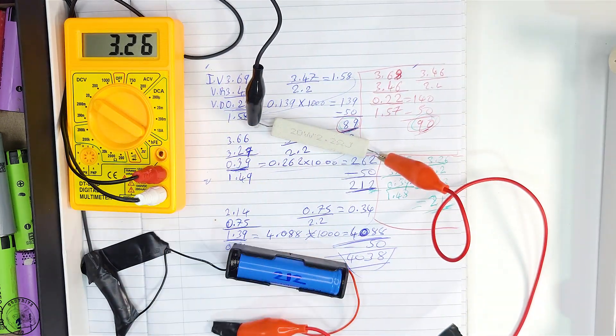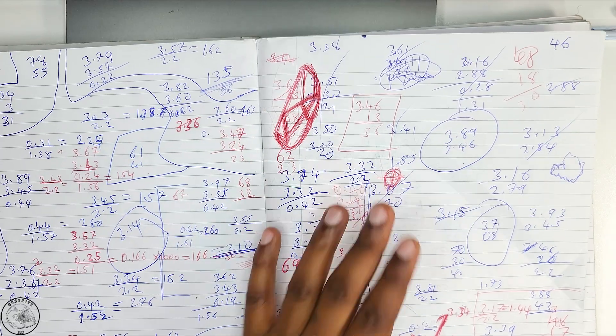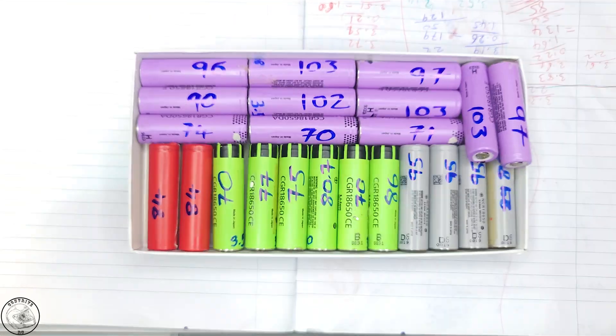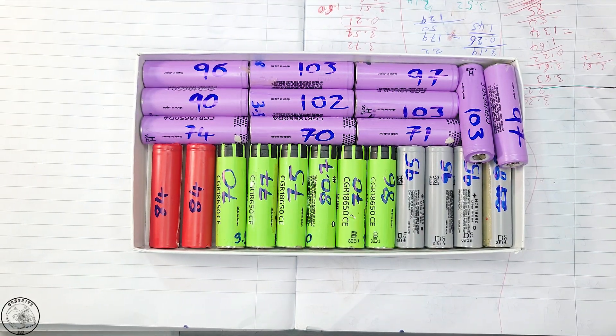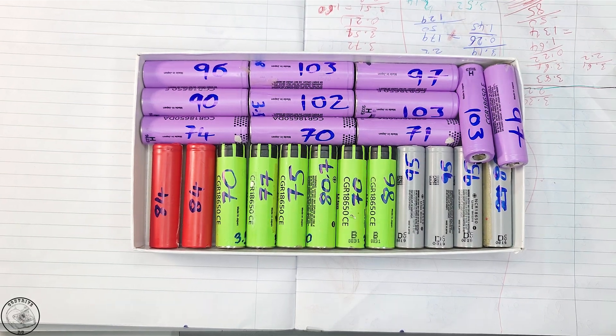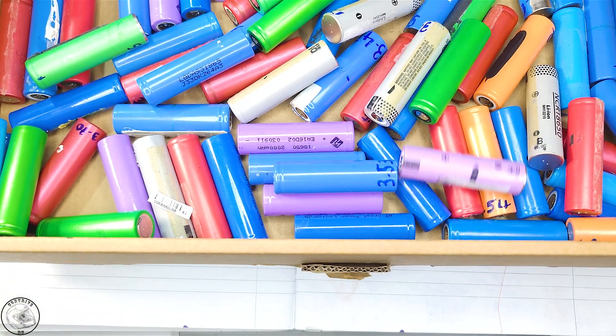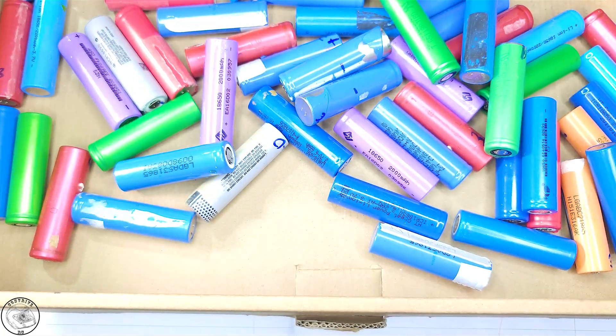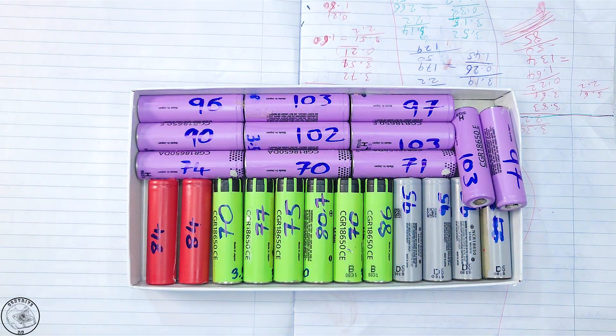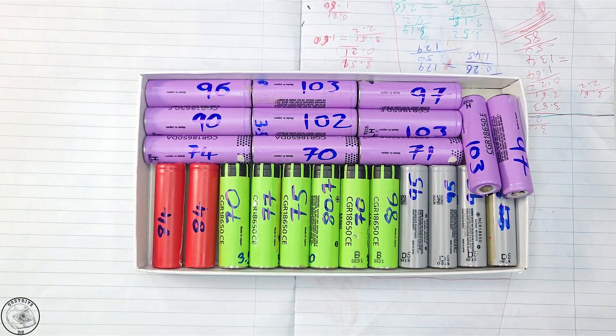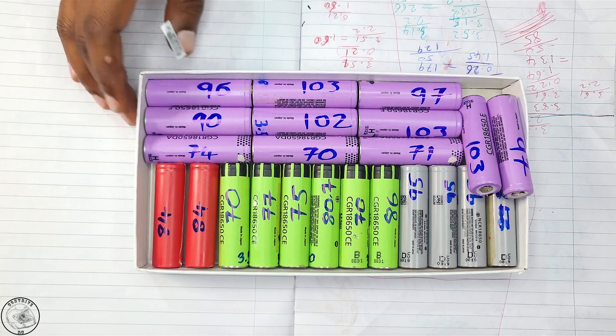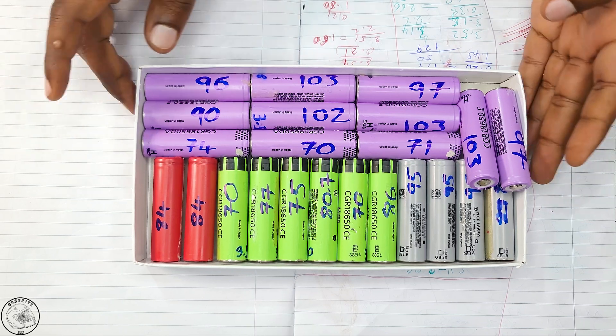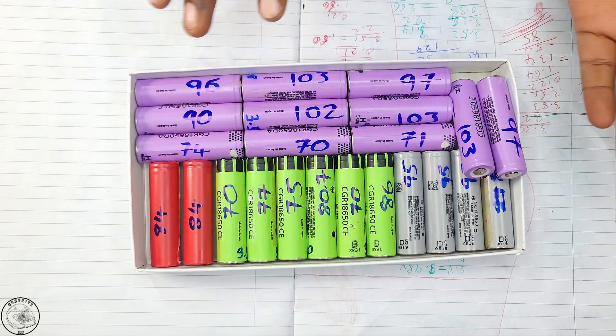After devoting an entire day to calculations, I salvaged only 23 viable cells out of 80. We began with over 120 cells total. Here's the breakdown: 7 cells exhibited 70 to 80 milliohms, 6 cells showed 80 to 90 milliohms, and another 6 cells fell within 90 to 100 milliohms.